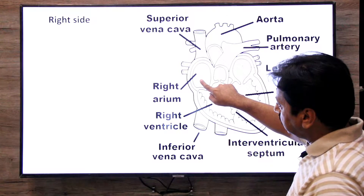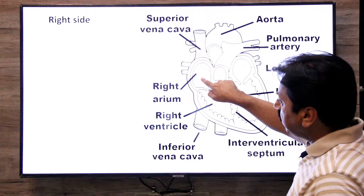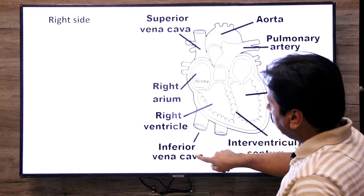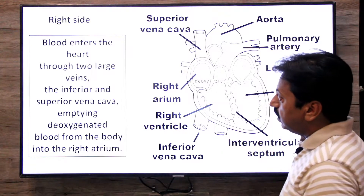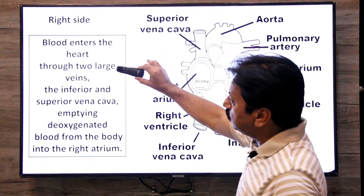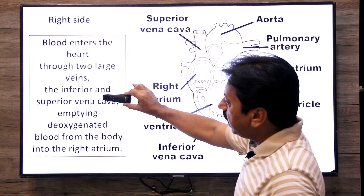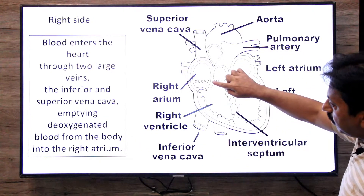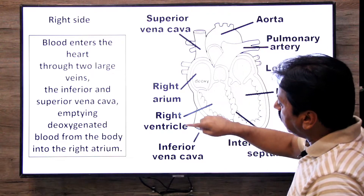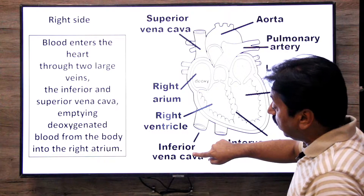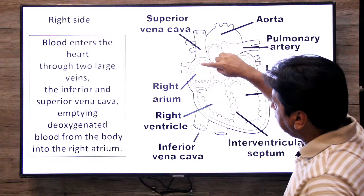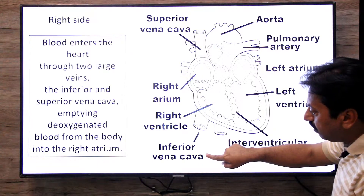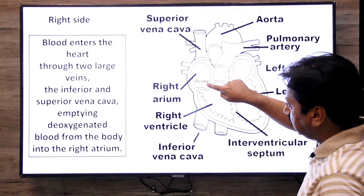This is our heart's right atrium. Which blood will it receive? Deoxygenated blood — from the superior vena cava or the inferior vena cava. Deoxygenated blood enters the heart through these two large veins, depositing deoxygenated blood from the body into the right atrium. The superior vena cava brings deoxygenated blood from the upper body parts, and the inferior vena cava brings it from the lower and middle body parts.